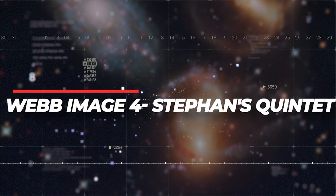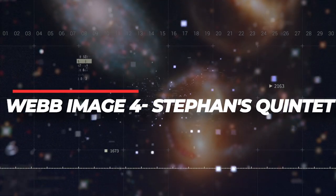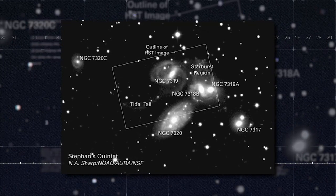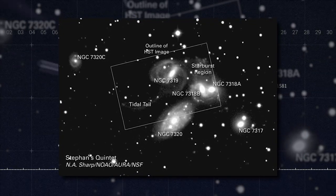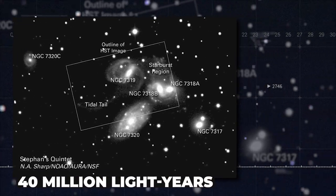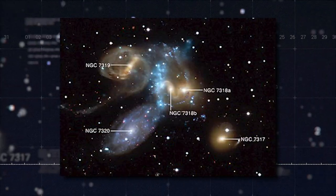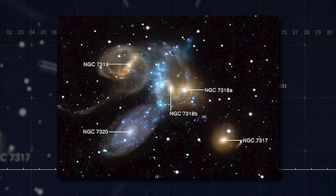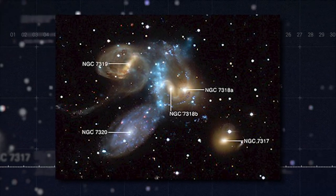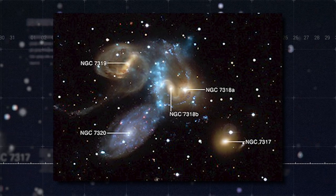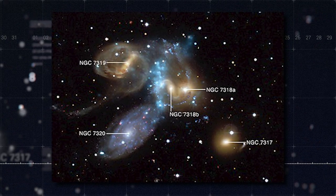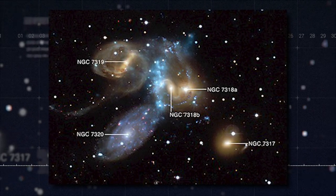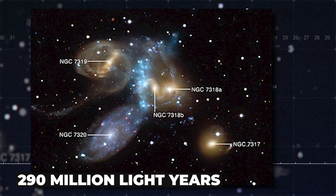Stephan's Quintet includes NGC 7320, the outlier, which is substantially closer to the Earth than the others, resting at 40 million light-years distance. It is therefore in the forefront of the picture, with the other four—NGC 7317, NGC 7318A, NGC 7318B, and NGC 7319—positioned behind it, and it's around 290 million light-years away from Earth.